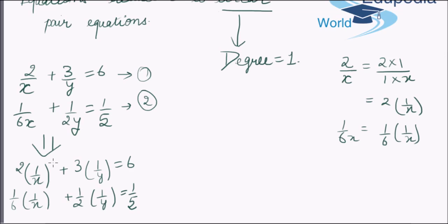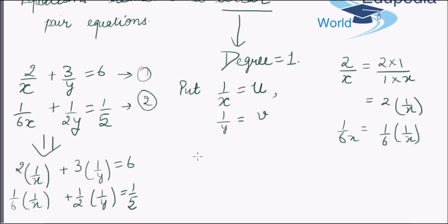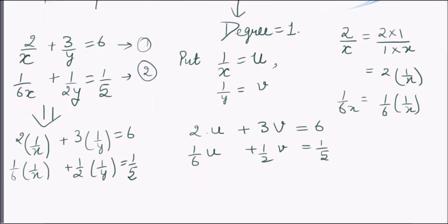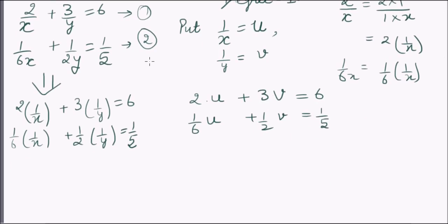Though there is no degree-one variable present, we can substitute a degree-one variable in place of the given variables. That is, we can put 1/x equal to a variable u and 1/y as a variable v. Thus the given pair of equations becomes 2u + 3v = 6 and (1/6)u + (1/2)v = 1/5.